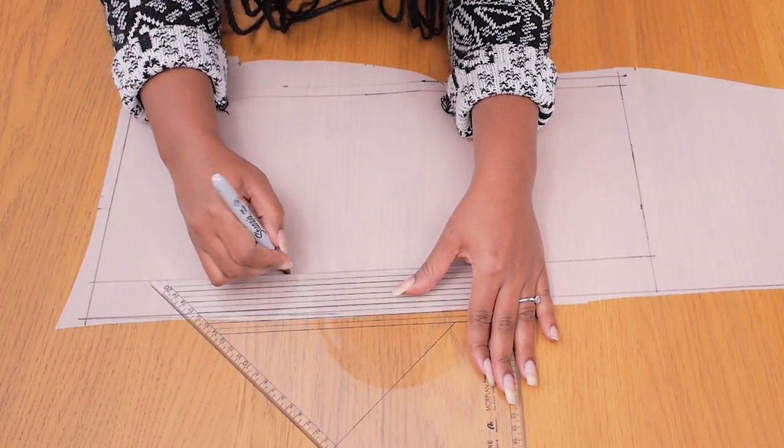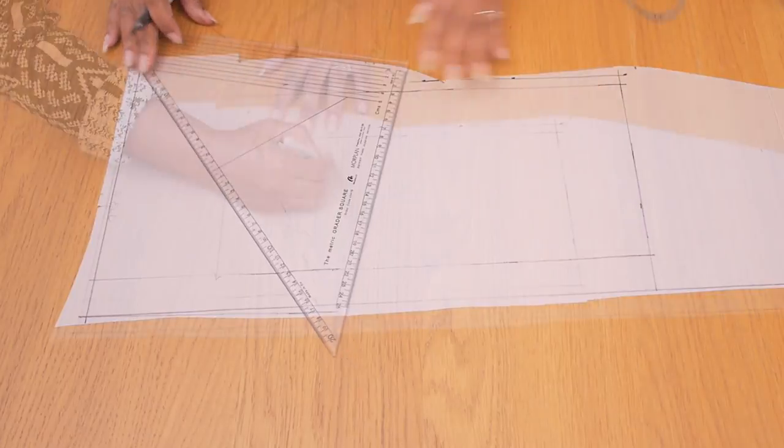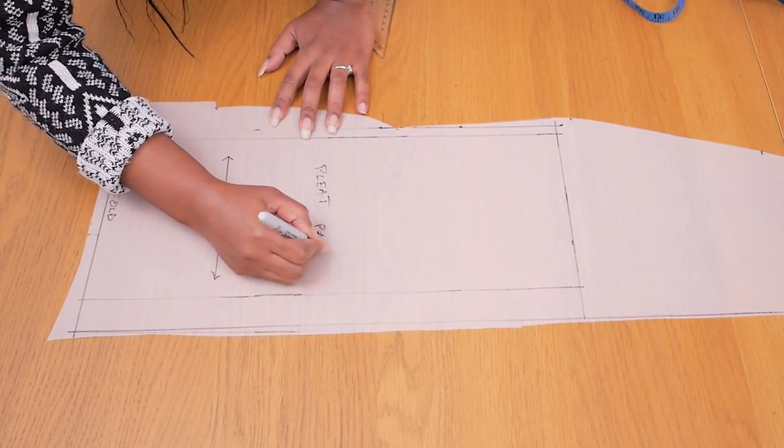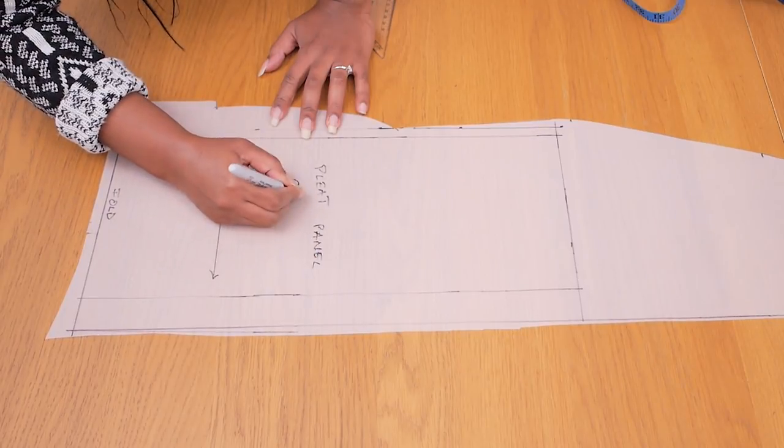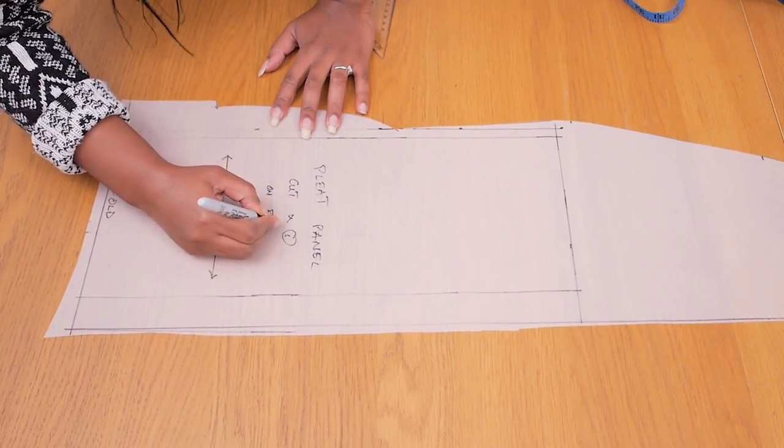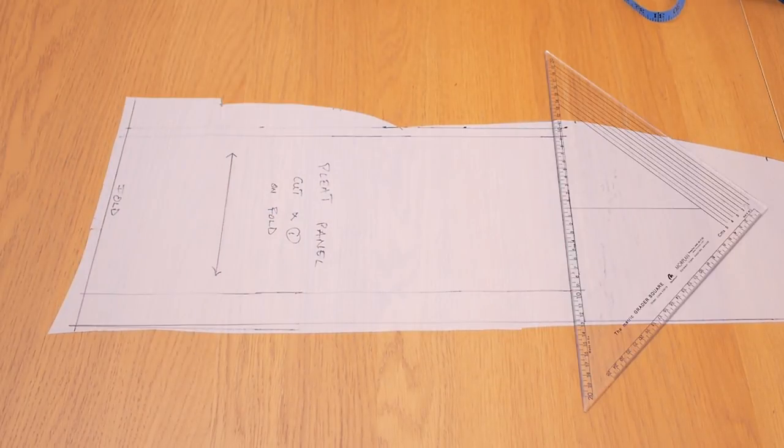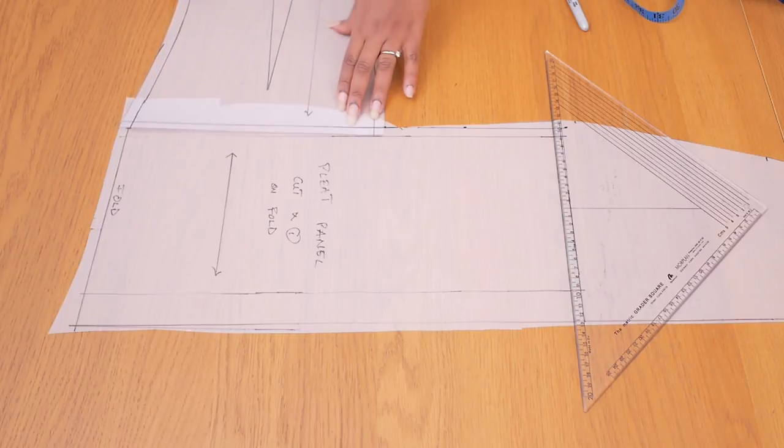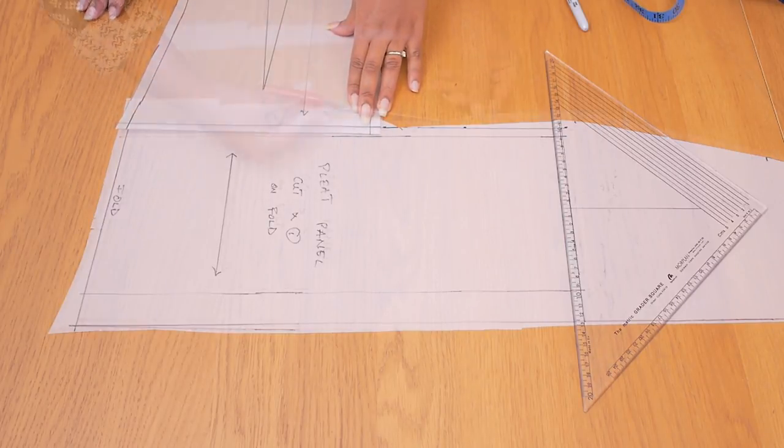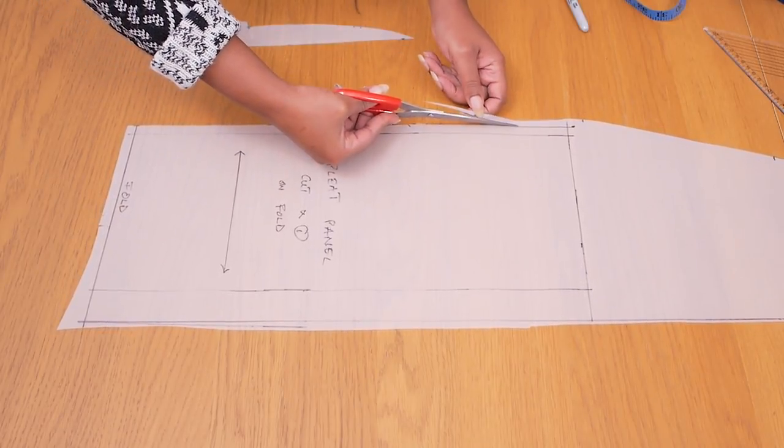So I'm just going in here to add my three centimeter or one inch hem allowance, adding my grain line and indicating what exactly this particular pattern is. So once that is done I'm going to cut this out and just double check that my measurements are correct before finalizing and working with this pattern piece. So as you can see here I'm just testing to check that it's wide enough for the half of the back.